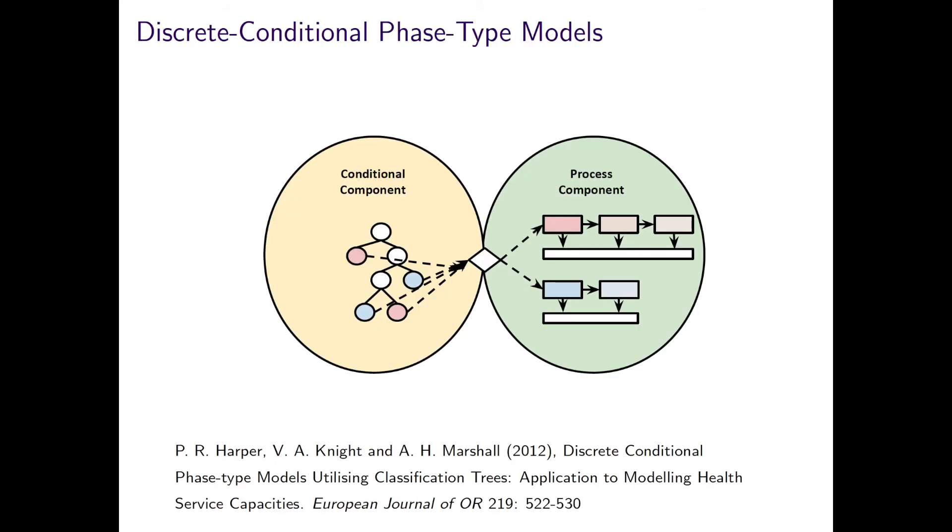And last but not least, one can start to build discrete conditional phase-type models, again by interfacing the conditional component, that is, to classify, again from the range of techniques listed earlier. And depending on the outcome, patients are directed into the corresponding process component, which here is fitted to each stream by a phase-type model.